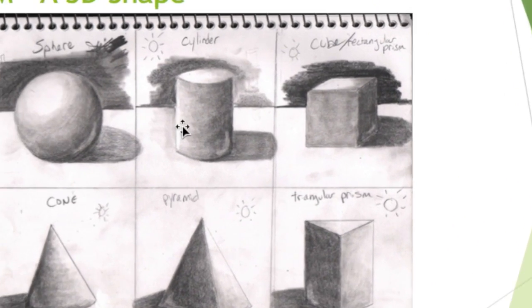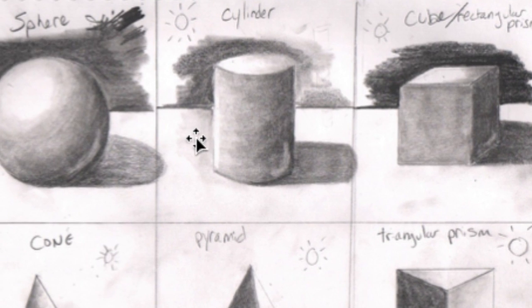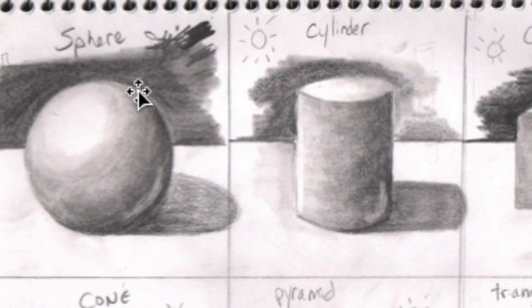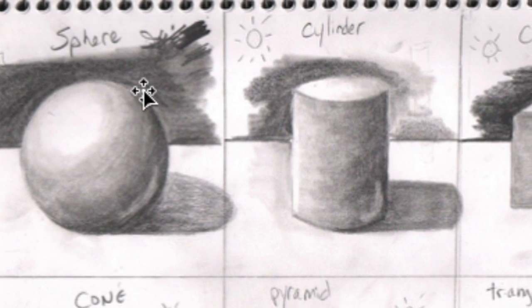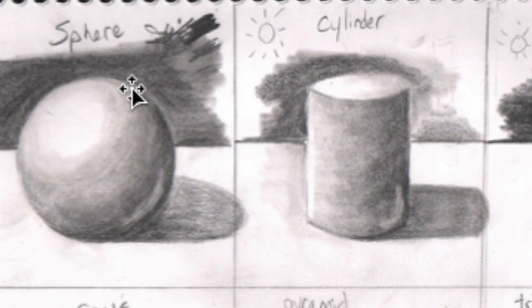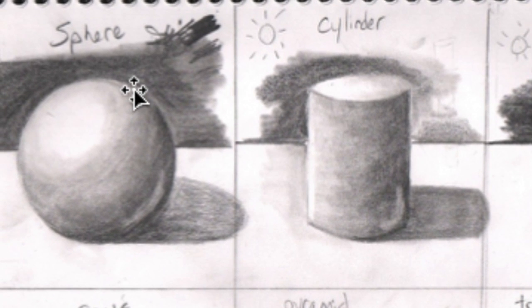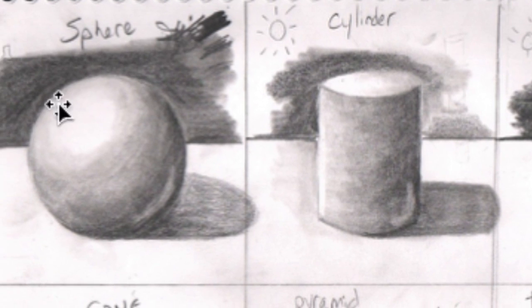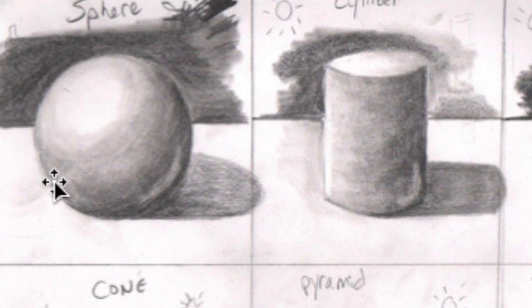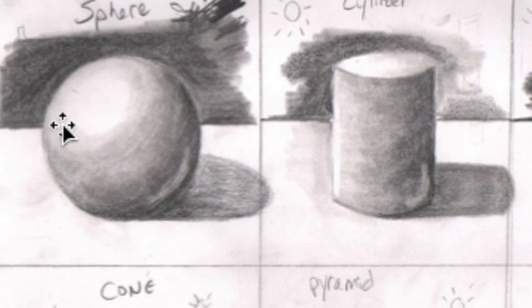Now, when you draw or paint, you can also create an object that looks like it has form, but this is just the illusion of form. True 3D form is a sculpture, something that you can hold in your hands or walk around. You can't hold an object from a drawing, but you can hold a sculpture in real life.